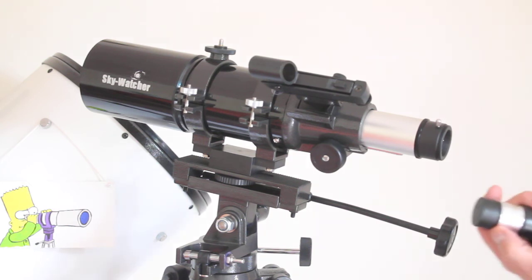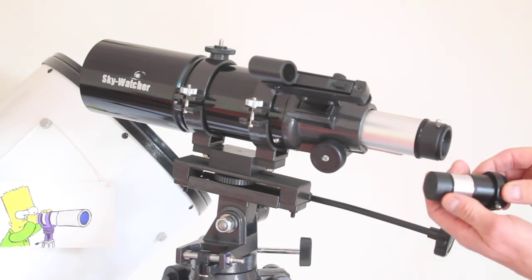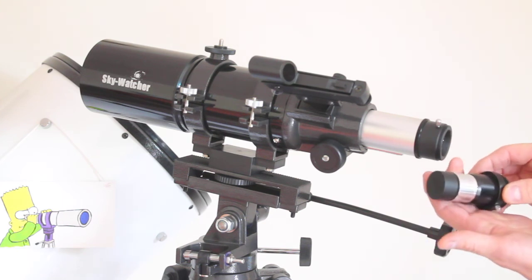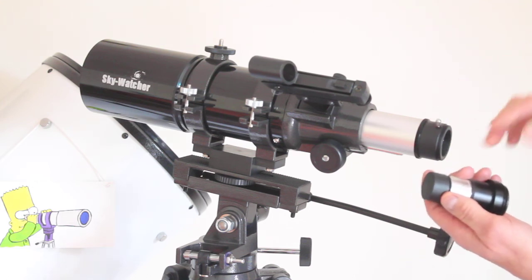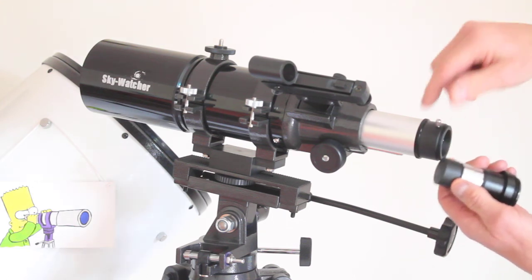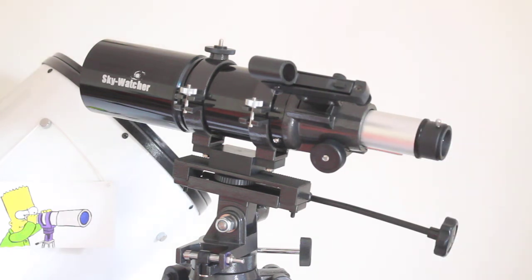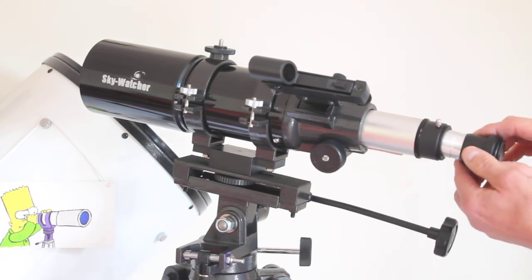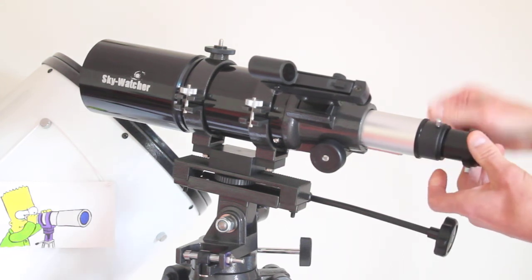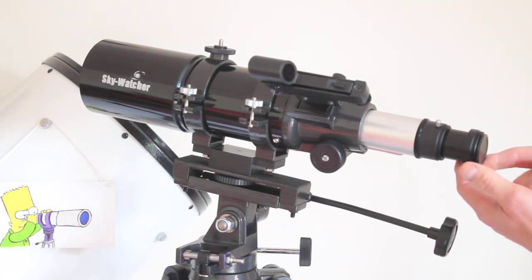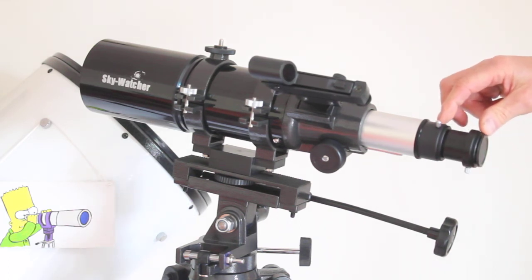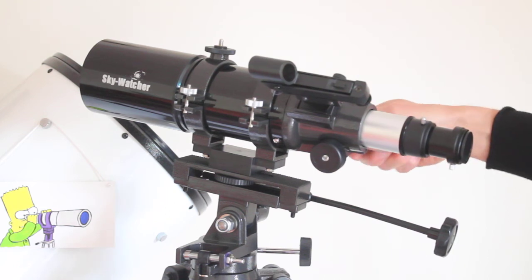This is the Sky-Watcher deluxe Barlow. What you can't do with the basic budget one is the lens doesn't come off. All you do is unscrew the lens there—that's now a clear aperture. Put that in there like so. That has a T-thread on it as well, and that is instantly a 40 millimeter extension tube. Job sorted without having to buy any extra adapters.